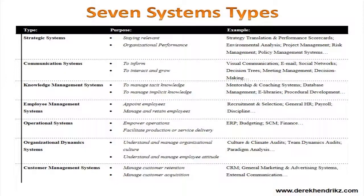To understand customer relationship management systems we need to understand the other systems in the organization so that we can see CRM in context. On your screen you can see various system types in an organization — seven categories or groups of systems. The first is your strategic systems, which basically help the organization to stay relevant and to survive.